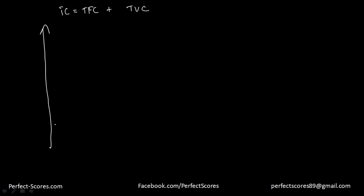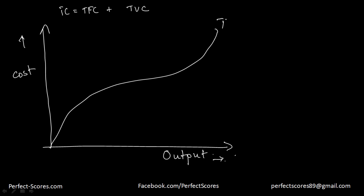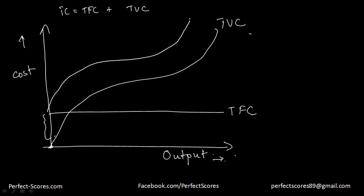If I were to plot these costs on a curve, the x-axis is the output and the y-axis is the cost. As you increase the output, the total variable cost increases. The total fixed cost is a constant — even if you produce zero output, you still incur that fixed cost. The total cost curve looks exactly the same as the variable cost curve, but shifted upward by the fixed cost units, because total cost equals total fixed cost plus total variable cost.